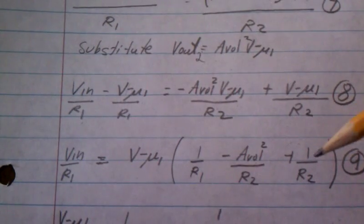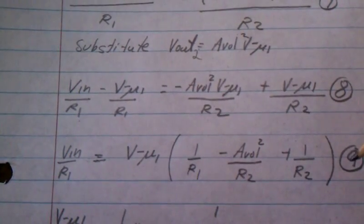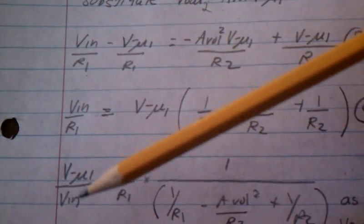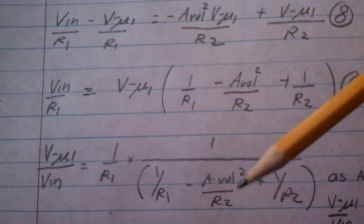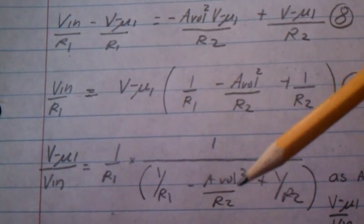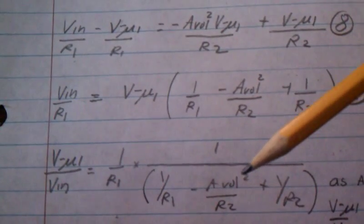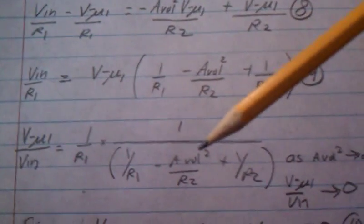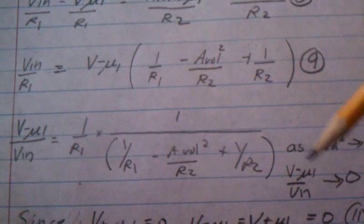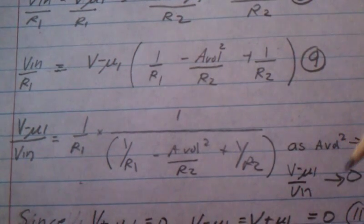Then we go along further and just keep deriving and pushing terms around until we get the ratio of V_minus U1 divided by V_in. We notice that as the open loop gain goes towards infinity, which it most certainly will now that it's squared, this whole term V_minus at U1 divided by V_in goes to zero.